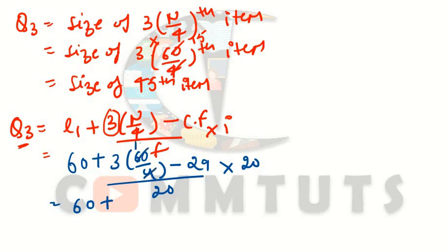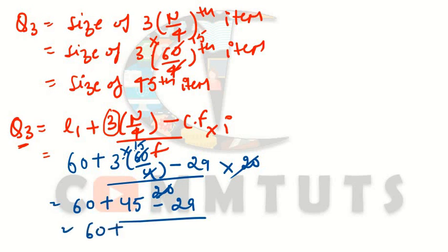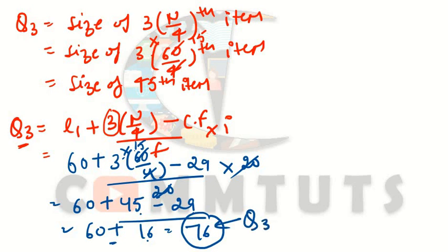Solving: 3 × 60/4 = 45. Then 45 − 29 = 16. Divided by 20 and multiplied by 20, the 20s cancel. So Q3 = 60 + 16 = 76. The value of the third quartile is 76.